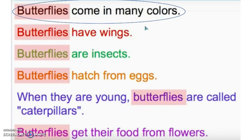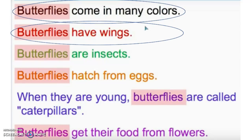Is that the one you were thinking about too? The first sentence — butterflies come in many colors. So we are thinking alike now. I'm going to identify my second key detail: butterflies have wings.